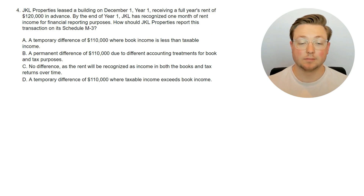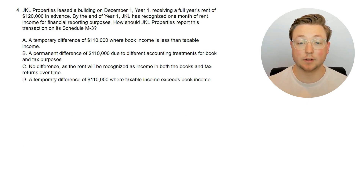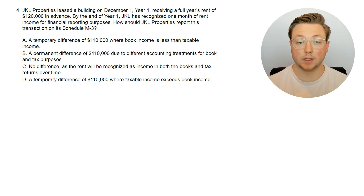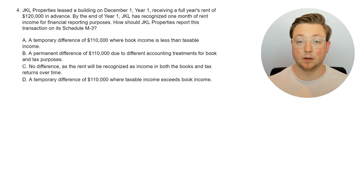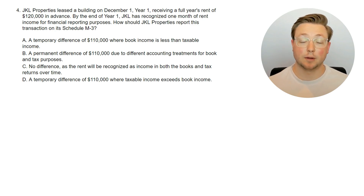Here's question four. JKL Properties leased a building on December 1, year 1, receiving a full year's rent of $120,000 in advance. By the end of year 1, JKL has recognized one month of rent income for financial reporting purposes. How should JKL Properties report this transaction on its Schedule M3? This is a little different because it involves income instead of an expense, but it's very similar. Pause the video and come back when you're ready.